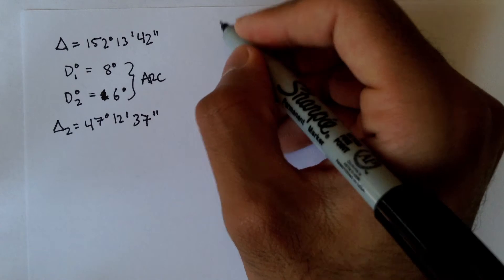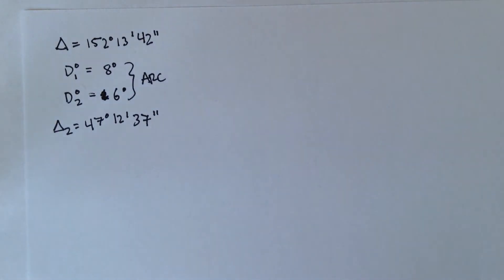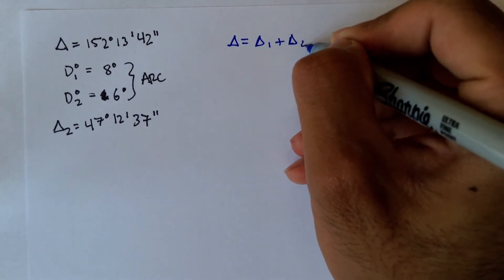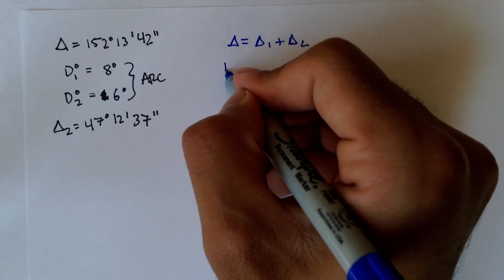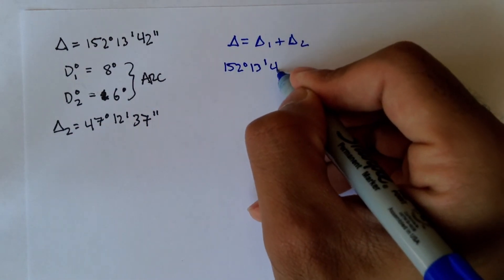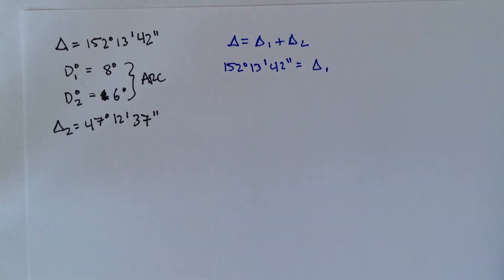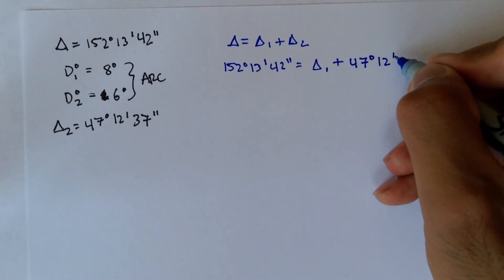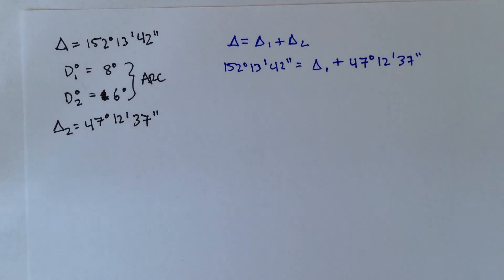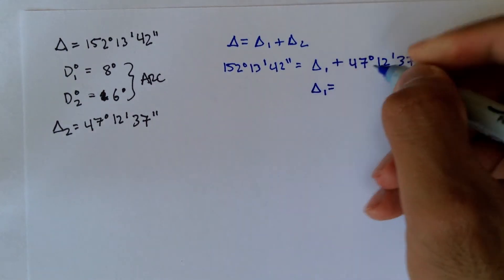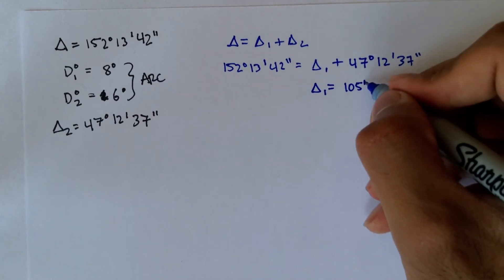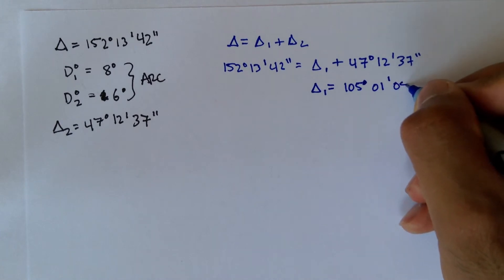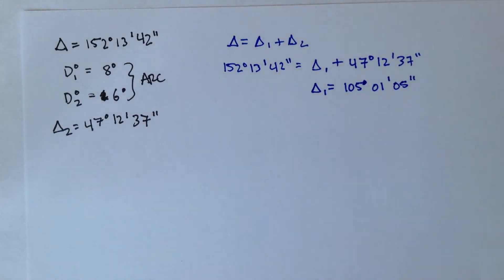We know that the total angle is equal to delta 1 plus delta 2. The total angle is 152 degrees, 13 minutes, 42 seconds, and that equals delta 1 plus delta 2, which is 47 degrees, 12 minutes, 37 seconds. If you plug that into your calculator, you should get delta 1 is equal to 105 degrees, 1 minute, 5 seconds.